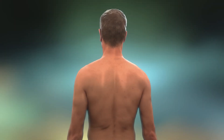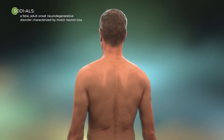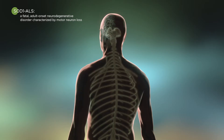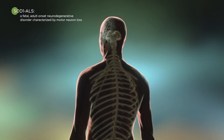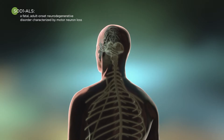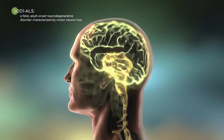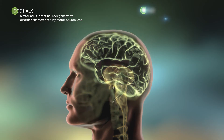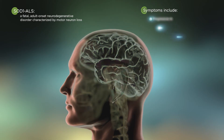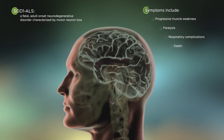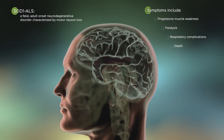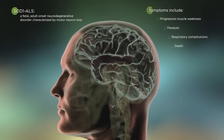Amyotrophic lateral sclerosis, or ALS, including SOD1 ALS, is a fatal adult-onset neurodegenerative disorder that exhibits a wide range of clinical and genetic heterogeneity. It is characterized by motor neuron loss in the brain and spinal cord, which is associated invariably with progressive decrease of muscle strength throughout the body, leading to paralysis and respiratory complications.